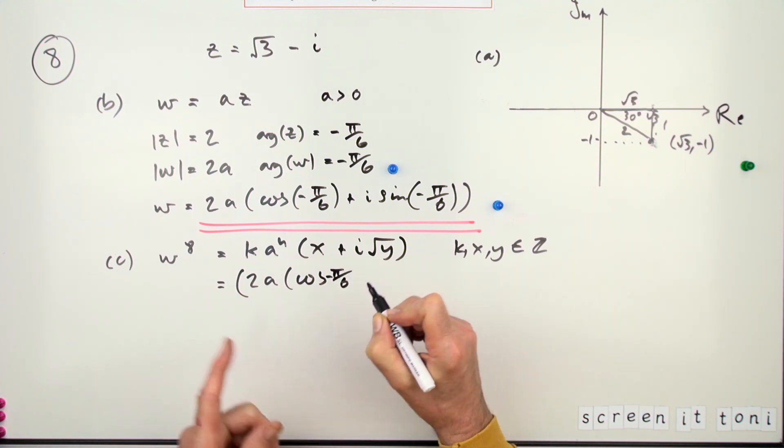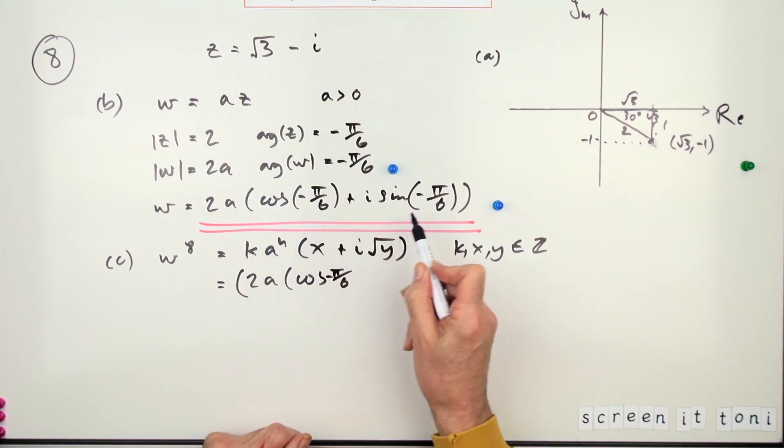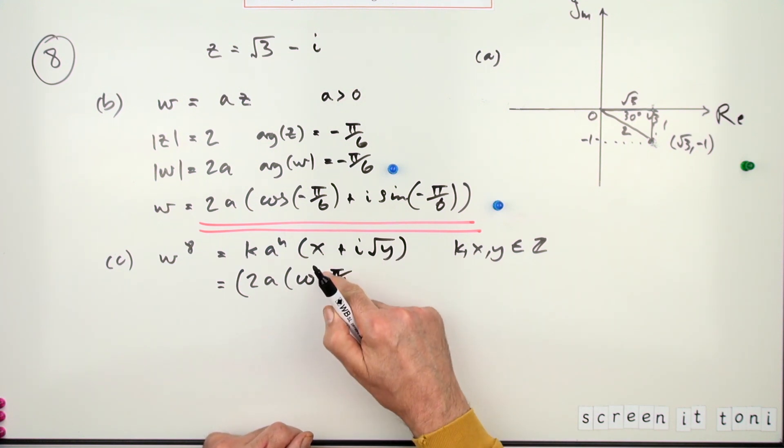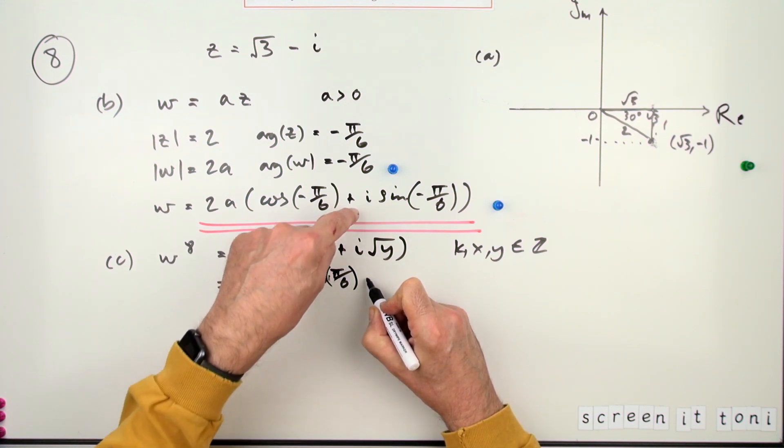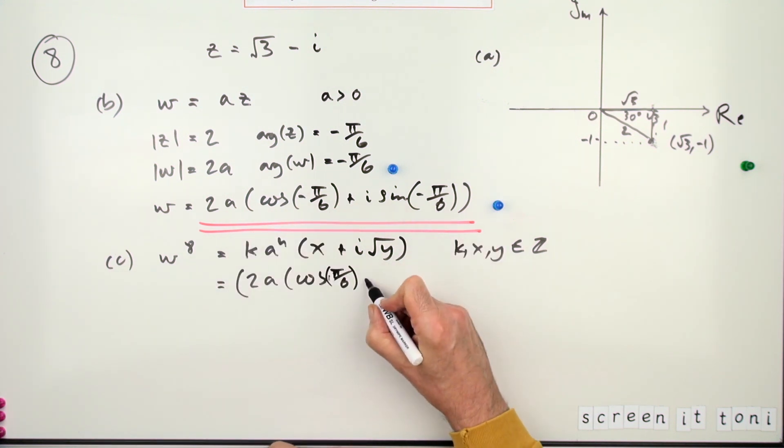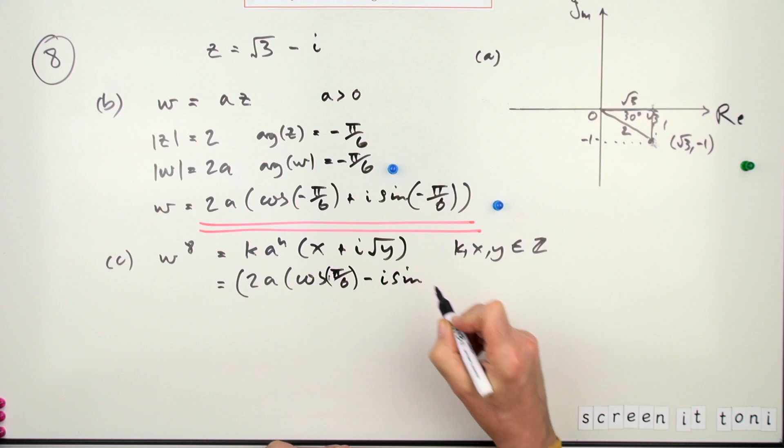Negative π upon six—but there is something you could do here just by using the odd and even functions. The cosine of a negative angle is equal to the cosine of the angle, and the sine of a negative angle is equal to the negative of the sine of the angle. So maybe I'll put it in that way.